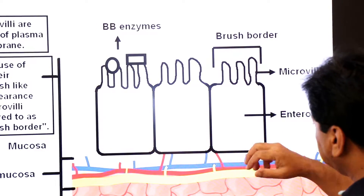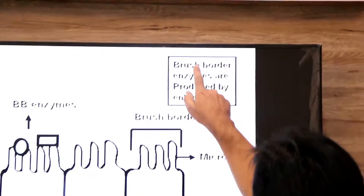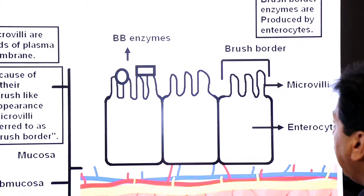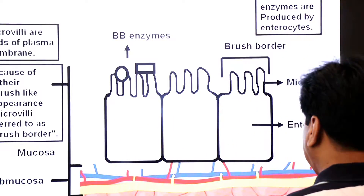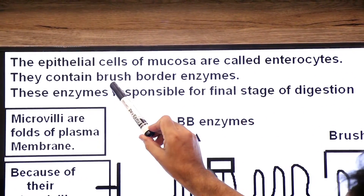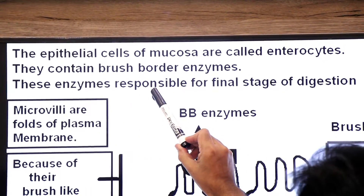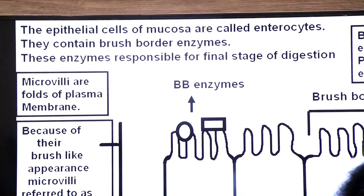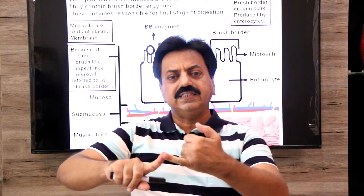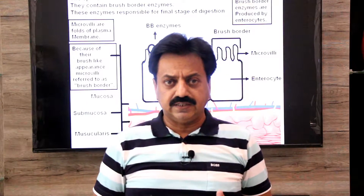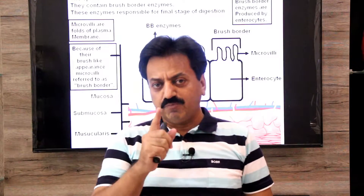Dear students, remember that in the small intestine there are two kinds of enzymes: pancreatic enzymes and brush border enzymes. Pancreatic enzymes perform the initial digestion in the small intestine, while brush border enzymes are produced by enterocytes in the mucosa layer and complete the final stage of digestion.